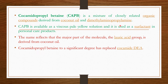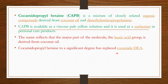Cocoamidopropyl betaine is a mixture of closely related organic compounds derived from coconut oil and dimethylaminopropylamine. CAPB is always available as a viscous pale yellow solution and is used as a surfactant in personal care products. The name reflects that the major part of the molecule, the lauric acid group, is derived from coconut oil, which is why people consider it a natural surfactant.